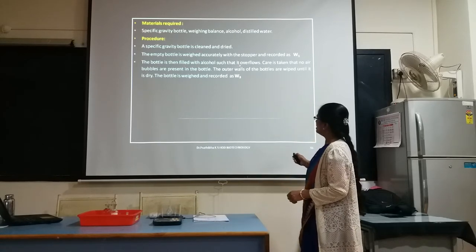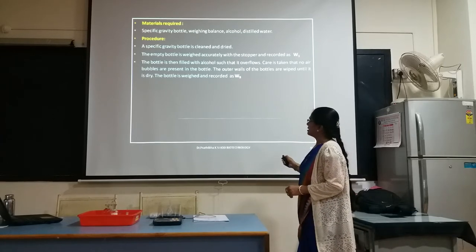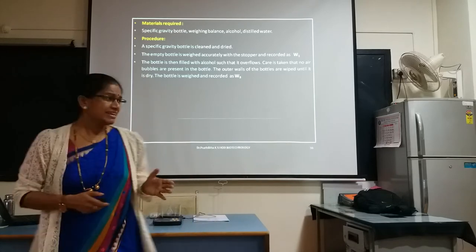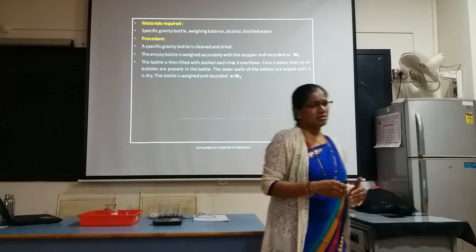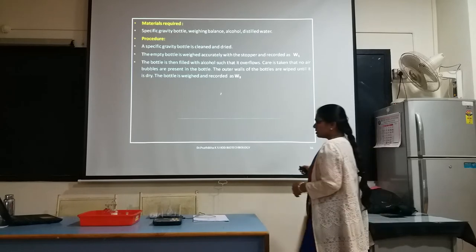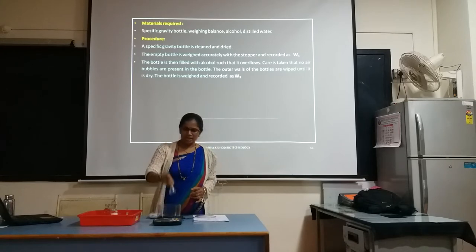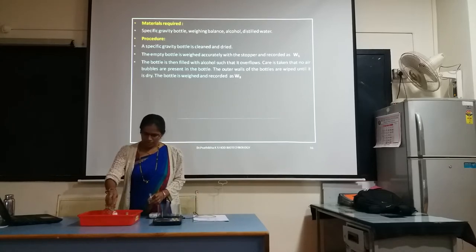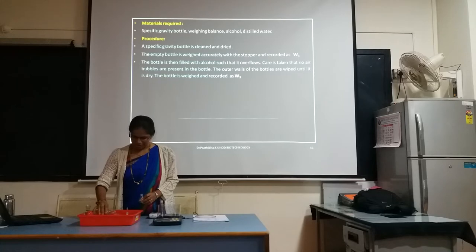The bottle is then filled with alcohol such that it overflows, and care is taken that no air bubbles are present in the bottle. The outer walls of the bottle are wiped until dry. The bottle is weighed and recorded as W3. So W3 is your specific gravity bottle along with the alcohol — the given sample. In the exam, whatever sample is given, you need to pour that. W1 is already recorded; now we will go for W3, for which you need to put the given alcohol sample.